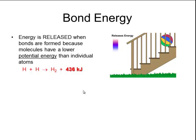Potential energy is analogous to a ball on a staircase. As the ball rolls down the stairs, it loses potential energy until it arrives at the bottom. Similarly, as hydrogen atoms get closer together, their amount of potential energy decreases until they form a hydrogen molecule with a lower amount of potential energy. The difference between the potential energy of the individual hydrogen atoms compared to the hydrogen molecule is the amount of energy released when that bond is formed — that amount of energy is known as the bond energy.